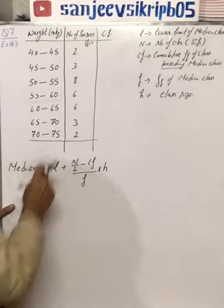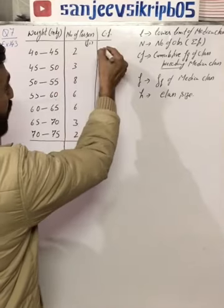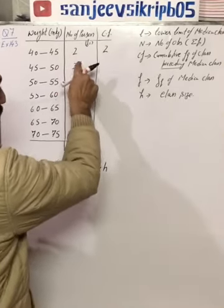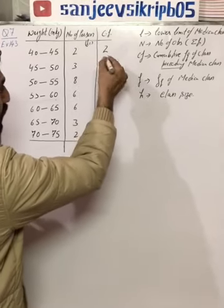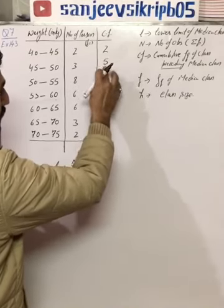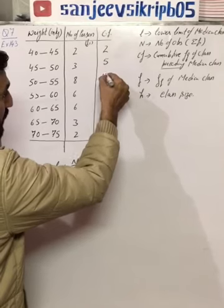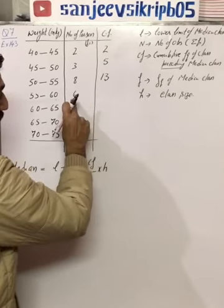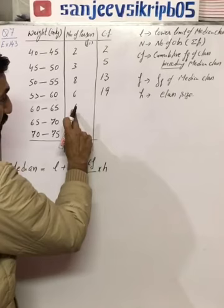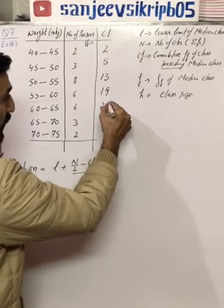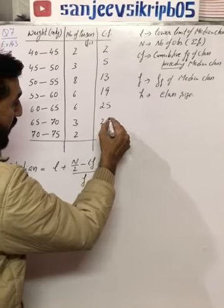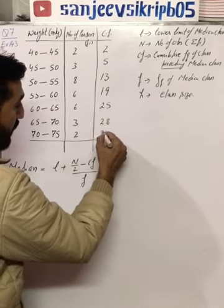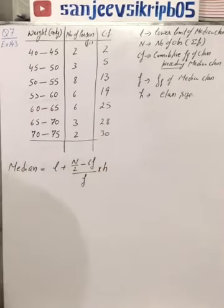Two plus three gives five, five plus eight is thirteen, thirteen plus six is nineteen, nineteen plus six is twenty-five, twenty-five plus three is twenty-eight, twenty-eight plus two is thirty. So this is the cumulative frequency.